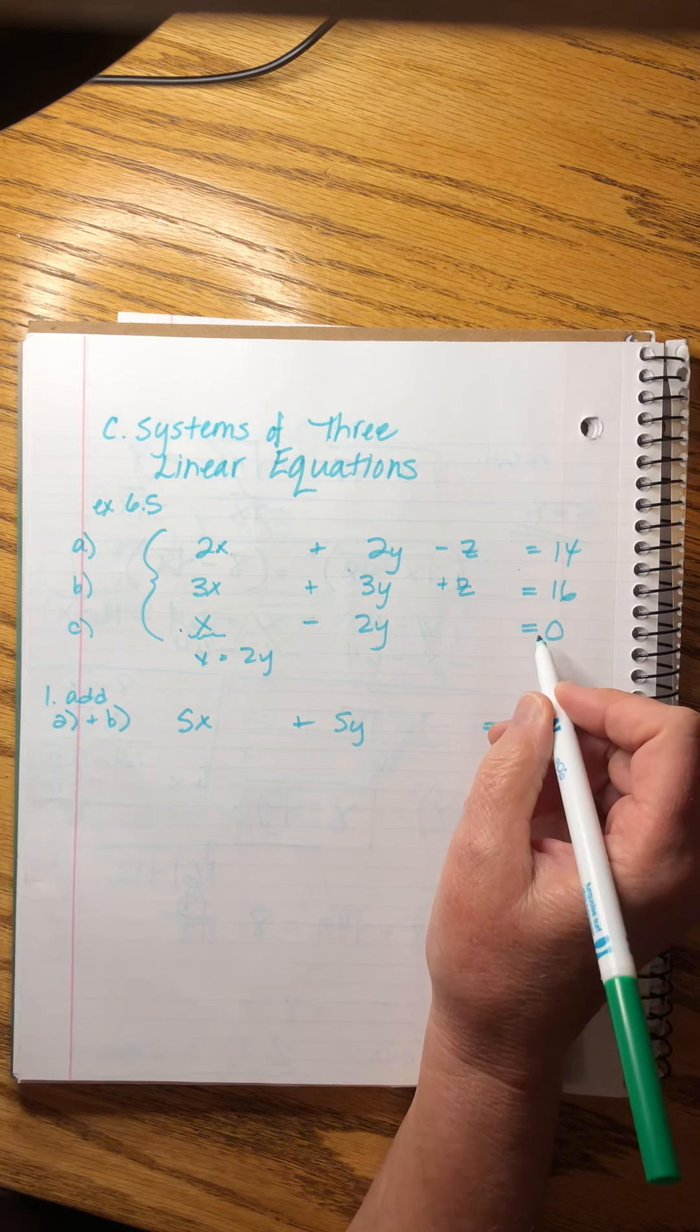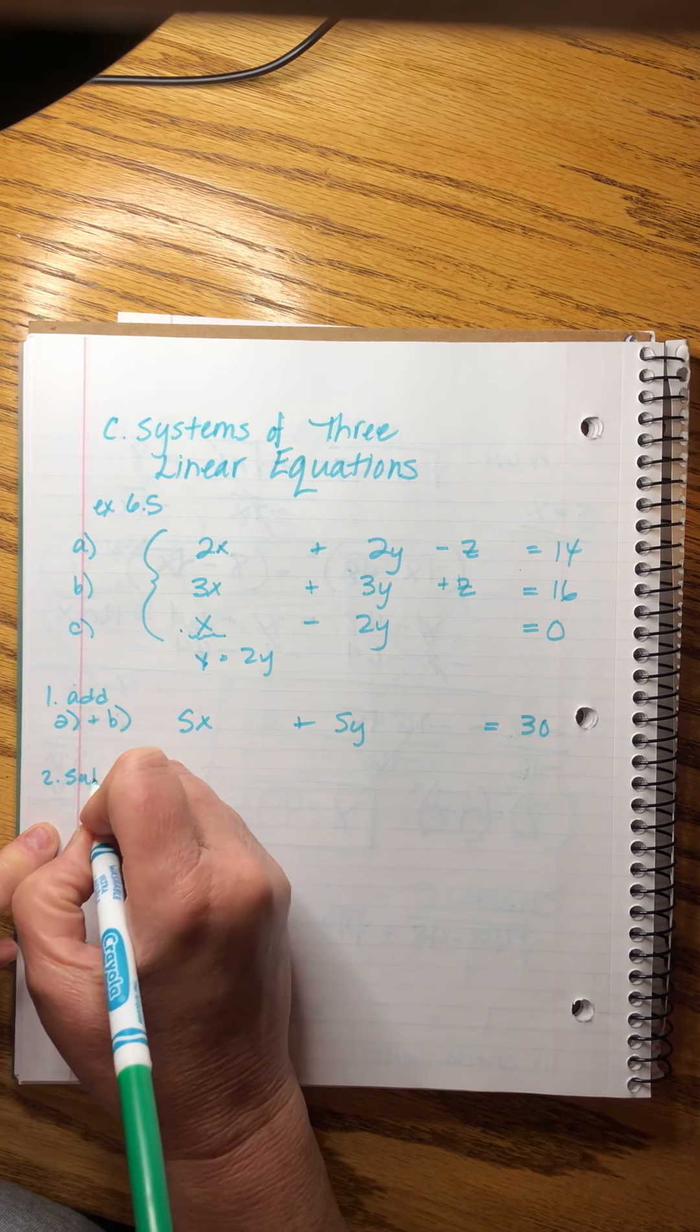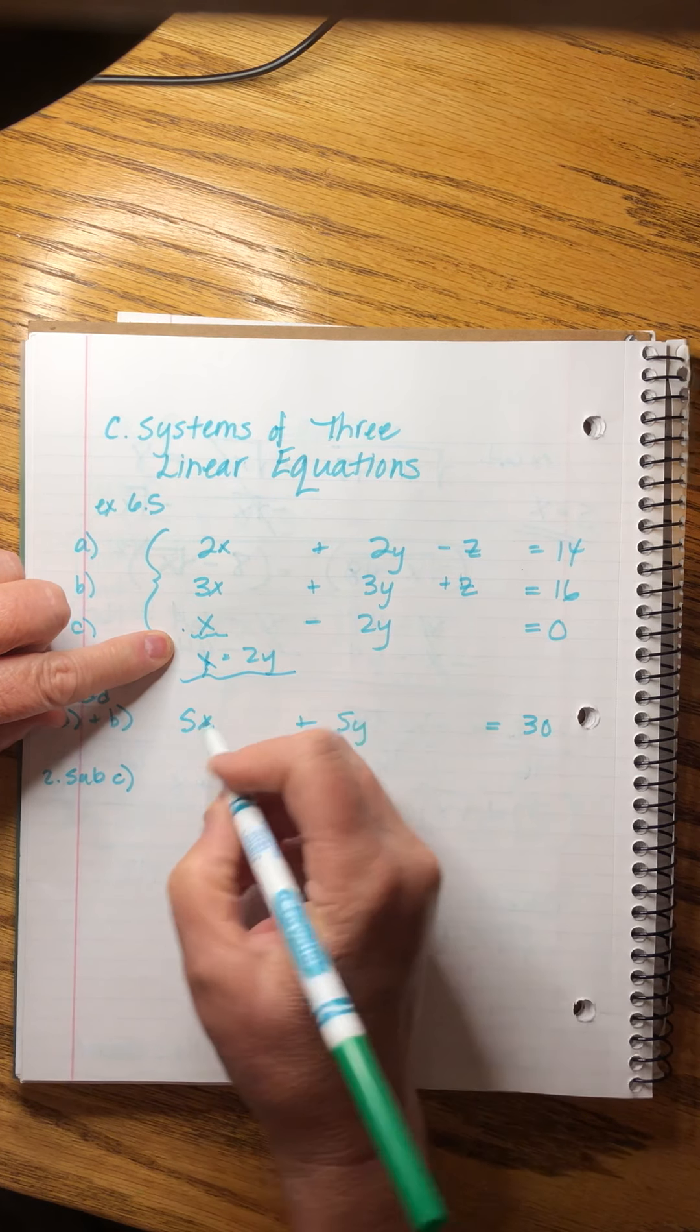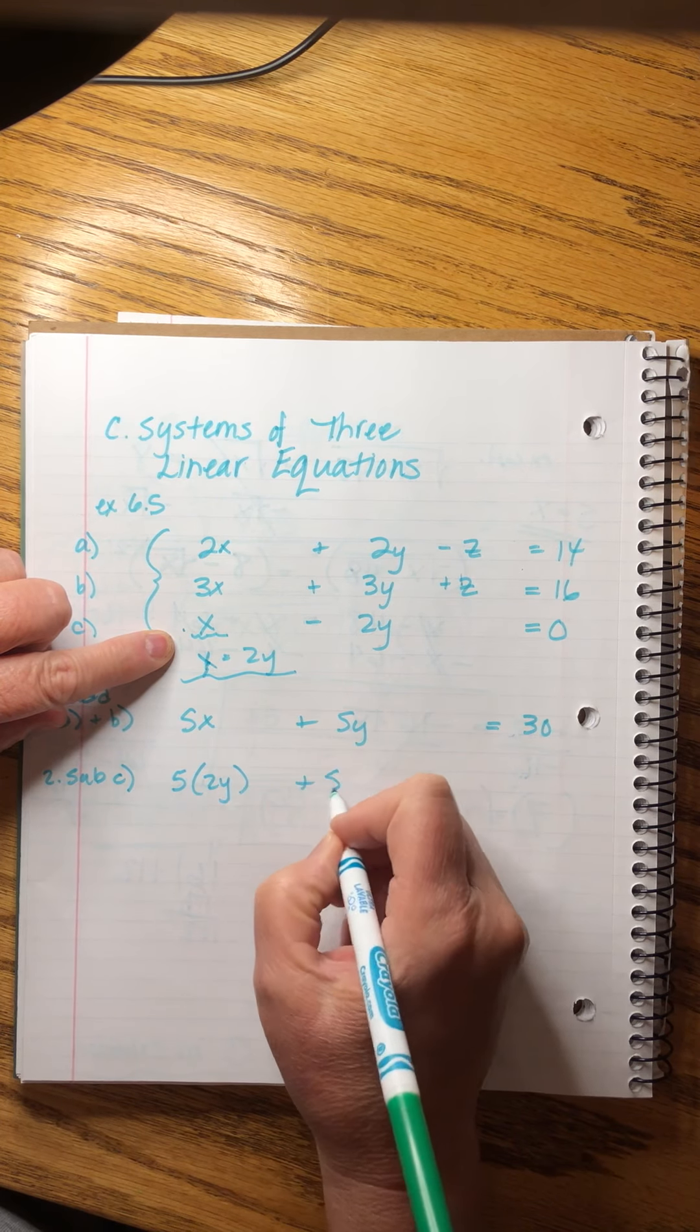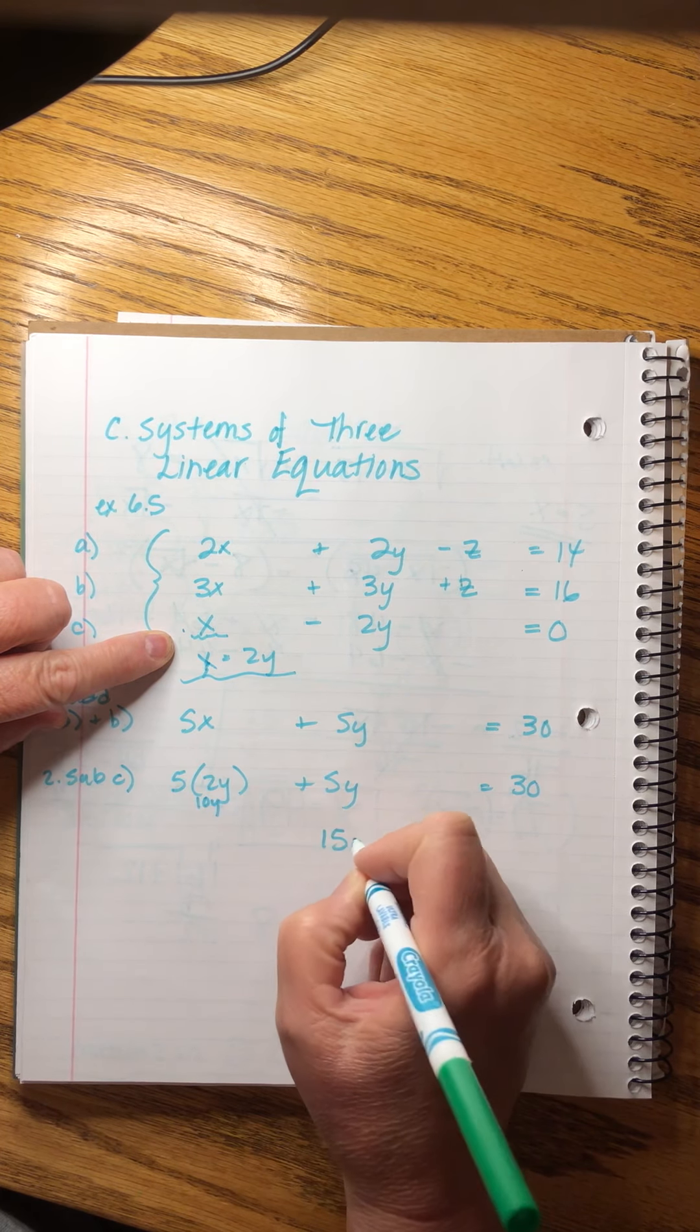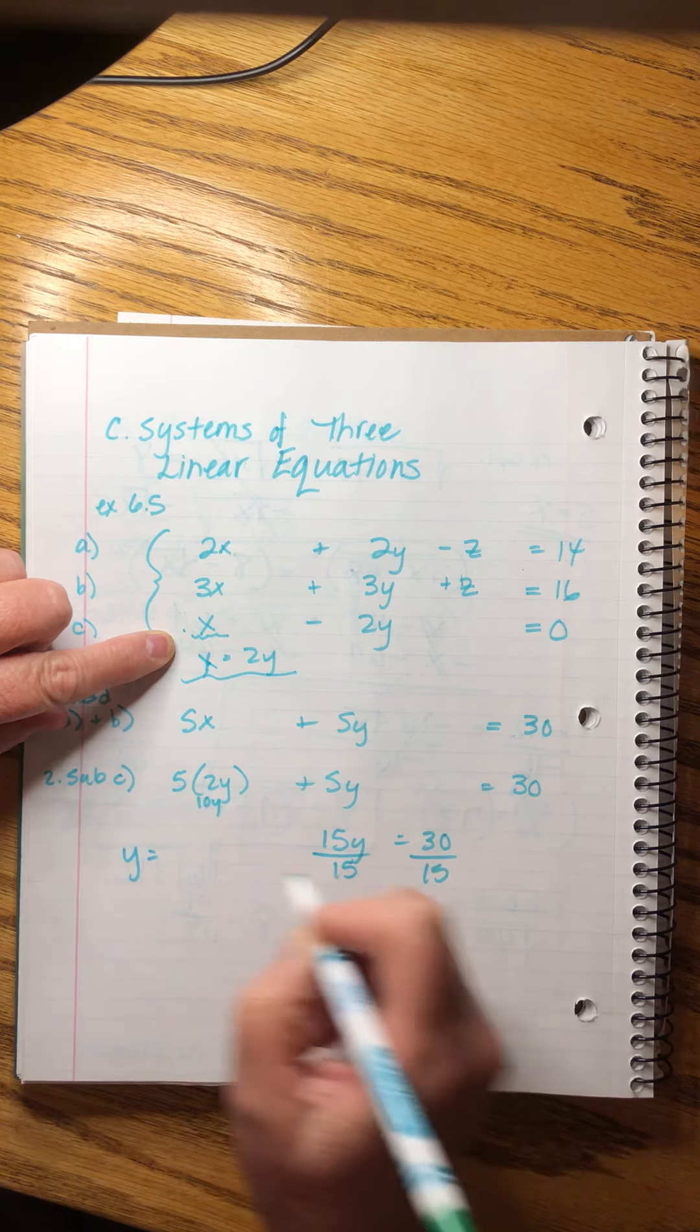Now, what I notice is that I can easily rewrite this x equals 2y. Because I can just add it over. And now, I can rewrite this combined thing. So, my second step will be to substitute in c. So, I've got x equals 2y. And so, I'm going to go 5 times 2y plus 5y equals 30. This is 10y. So, I can say 15y equals 30. And y equals 2.